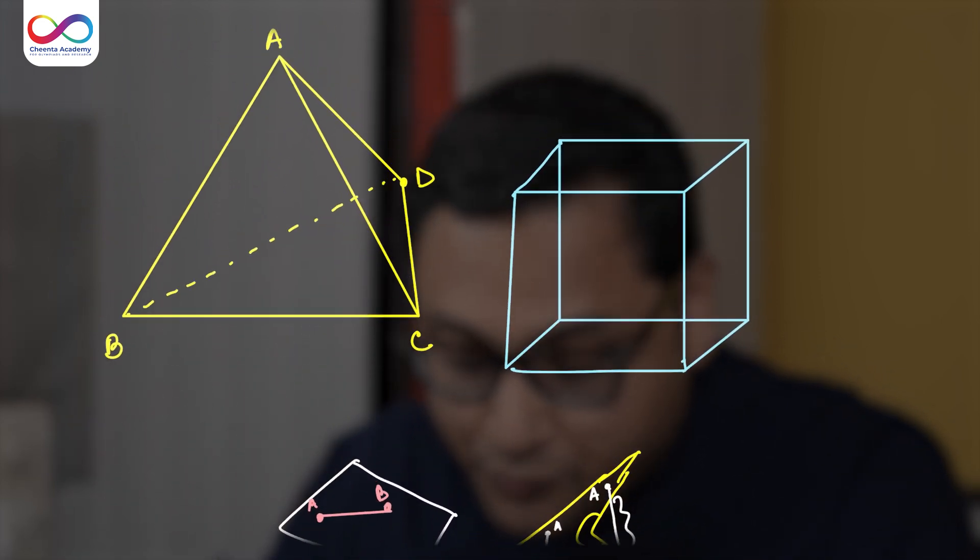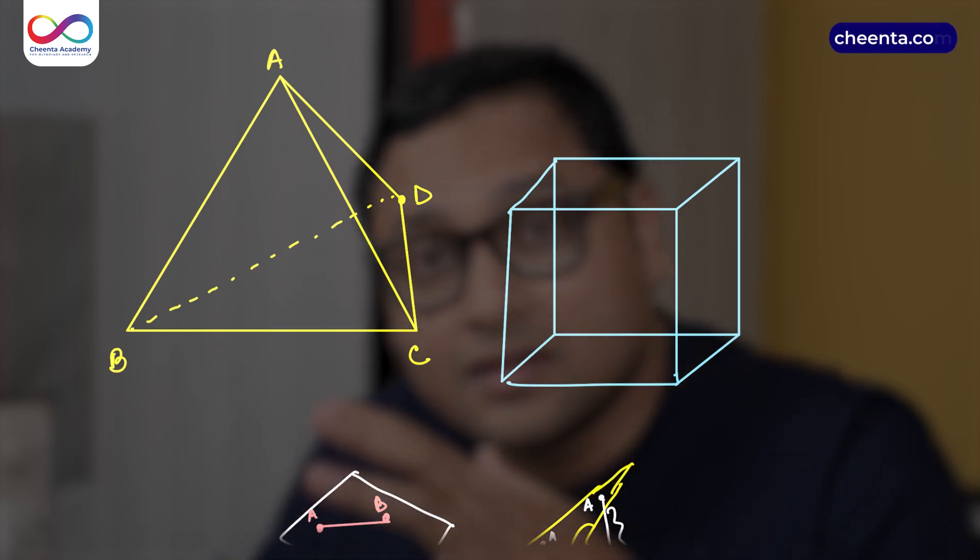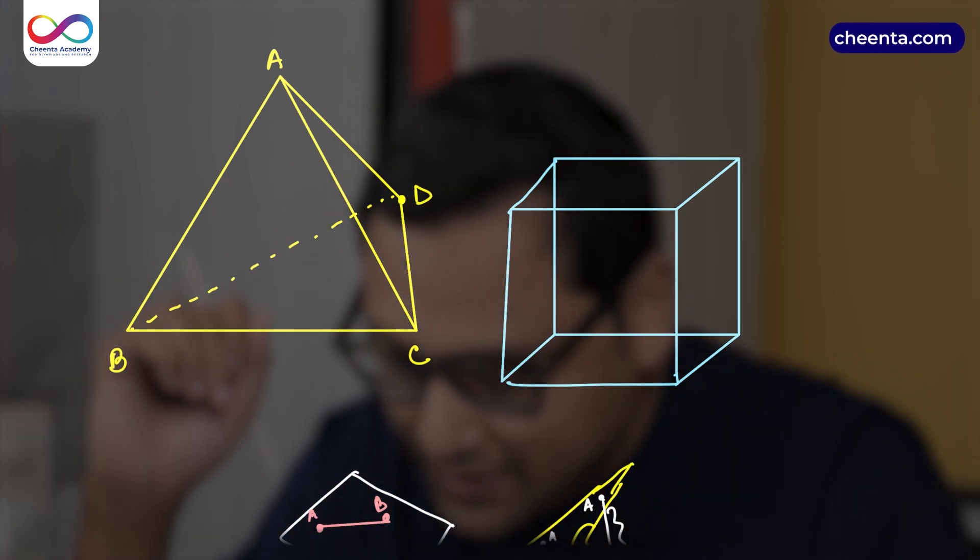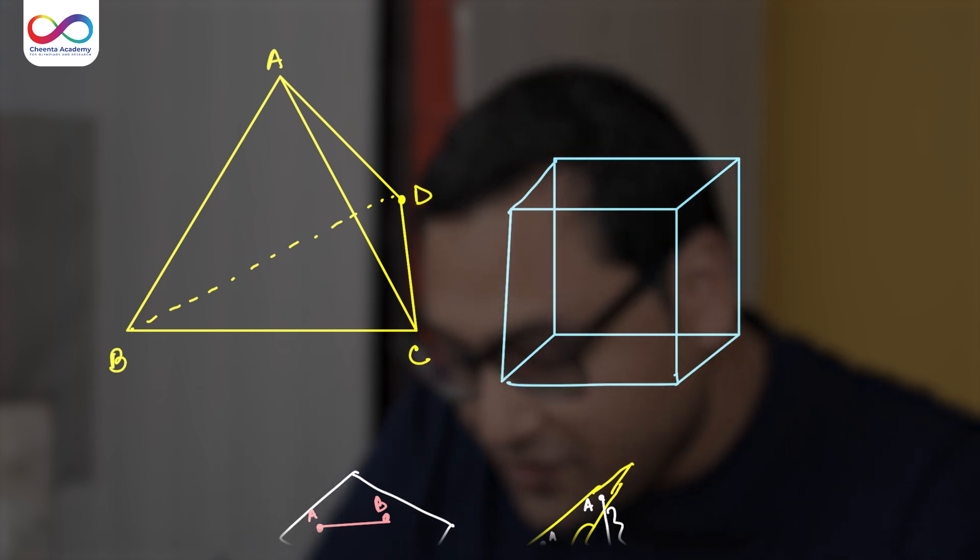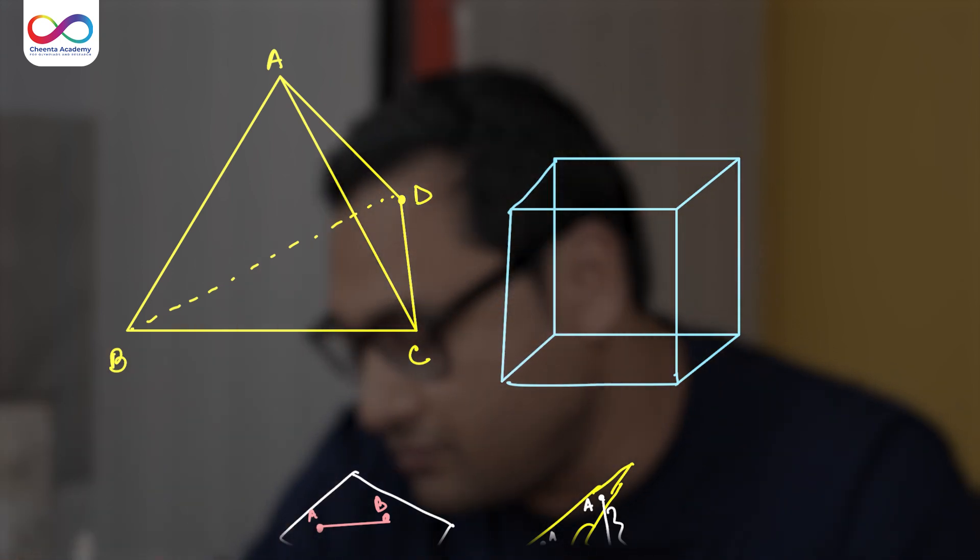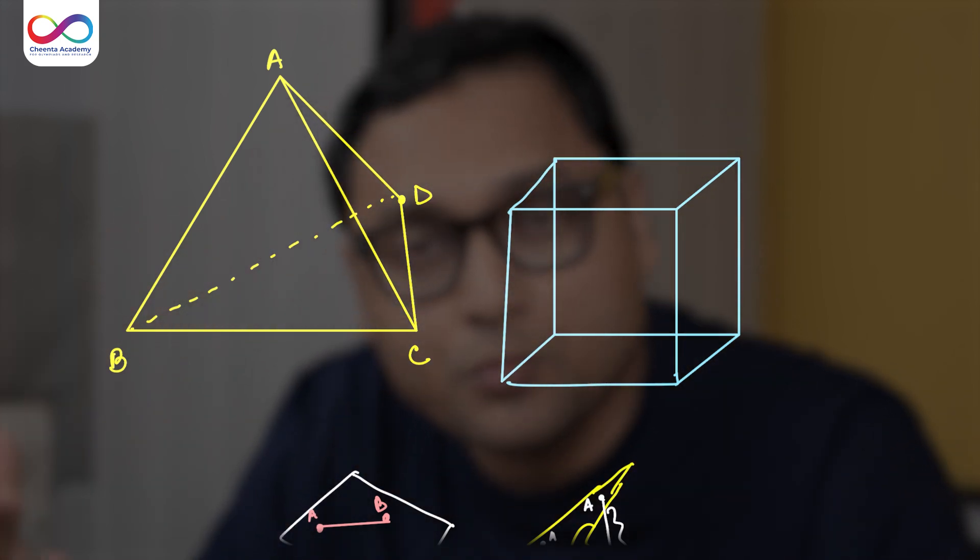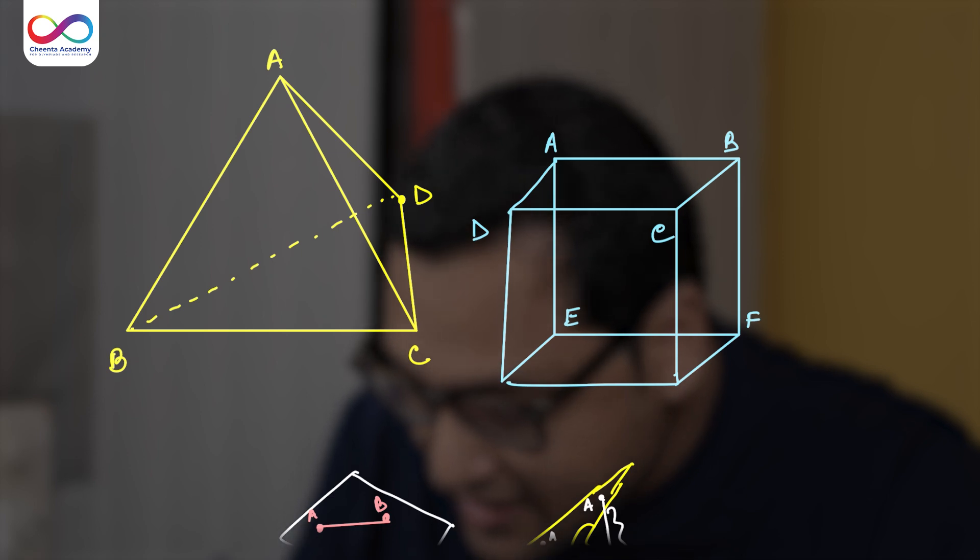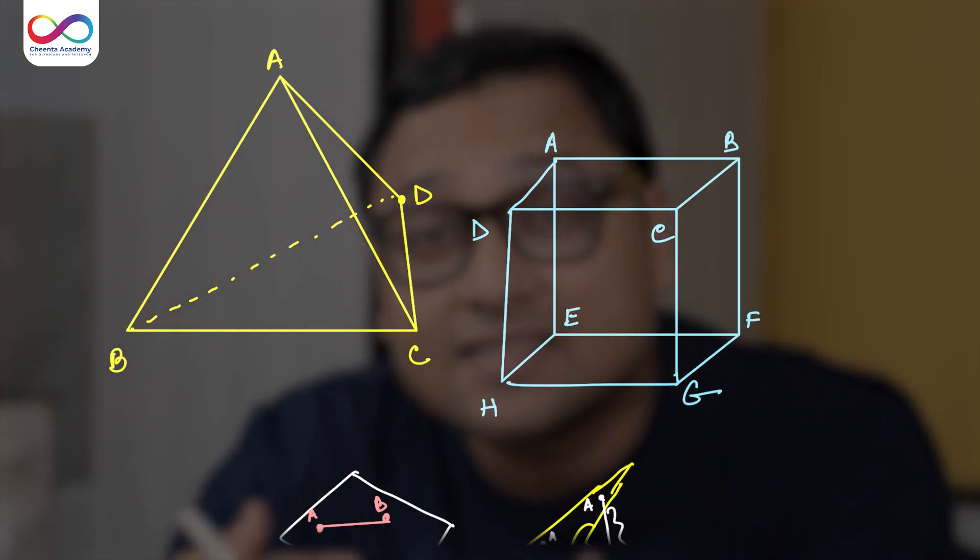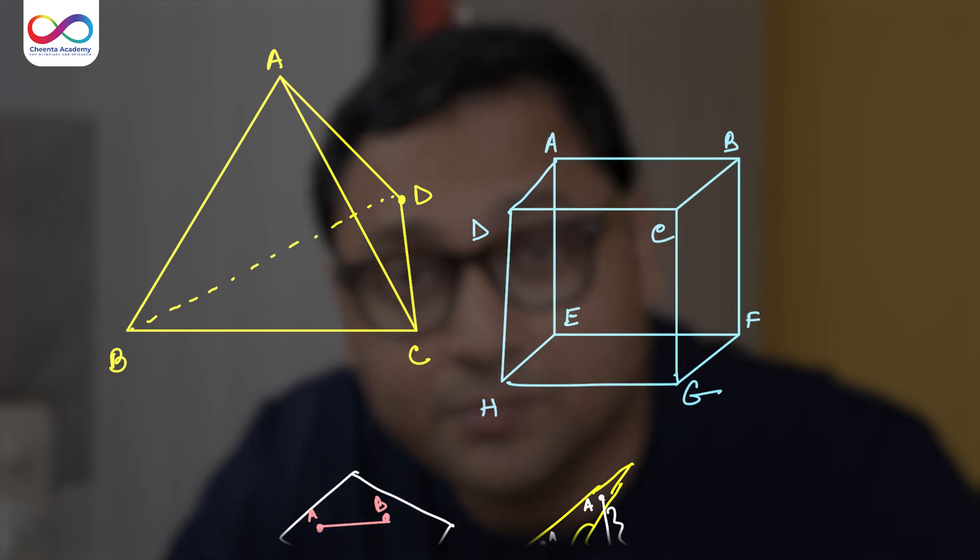So the same thing is true about polyhedra, three-dimensional figures. All right. So the question really is this. If you have a polyhedra, be it a tetrahedron, be it a cube, is there anything that is not changing even if you change the polyhedra? Something that is not changing even if you change the polyhedra.